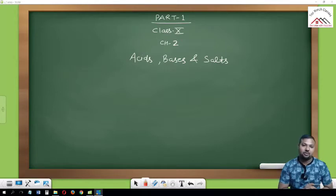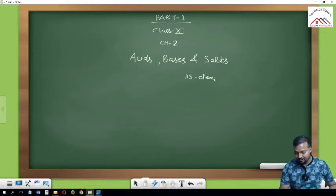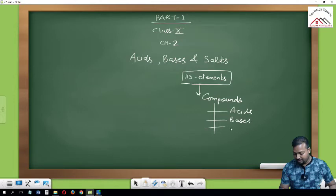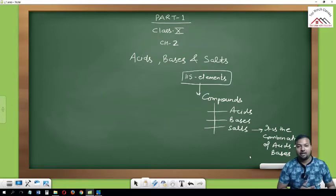Today we are going to start chapter number two, Acid Bases and Salts for class 10th, part number one. We know very well that about 115 elements are there. In elements, the combination of compounds falls in three categories: number one is acids, number two is bases, and number three are salts. The definition of salts is that it is the combination of acids and bases.